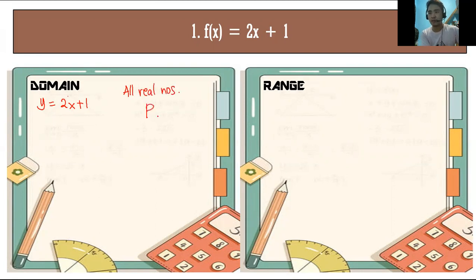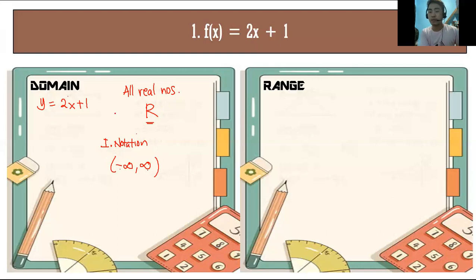In symbol, the domain is ℝ. In interval notation, the domain is (-∞, +∞), where negative infinity and positive infinity are the endpoints. Any value substituted for x will not make the function undefined or imaginary.